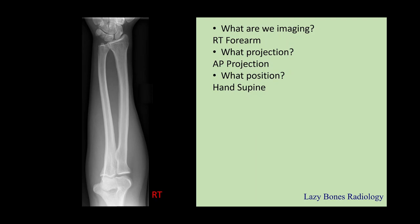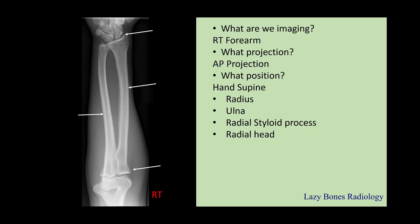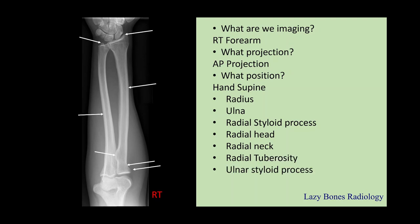Now let's practice some anatomy. The radius, which is on the lateral side. The ulna, medial side. The radial styloid — this is the most distal part of the radius bone. The radial head, neck, and the tuberosity. Next is the ulnar styloid, which is the most distal part of the ulnar bone. And the humerus.